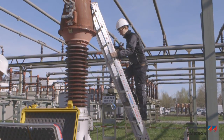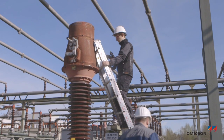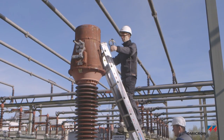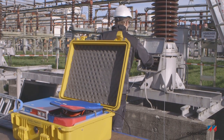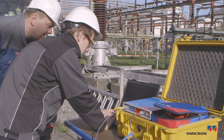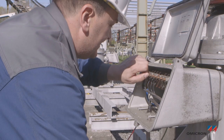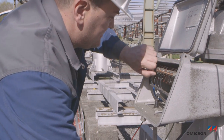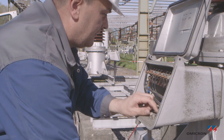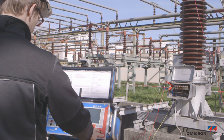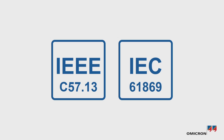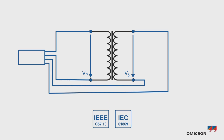Partial discharge measurements may be performed to verify the integrity of the voltage transformer. A detailed analysis of the insulation condition can be obtained through dielectric response measurements. Short circuits can be detected with ratio measurements. However, simple ratio measurements cannot be used to verify the accuracy according to the standards, as the excitation voltage is too low and the burdens defined in the standards are not available.